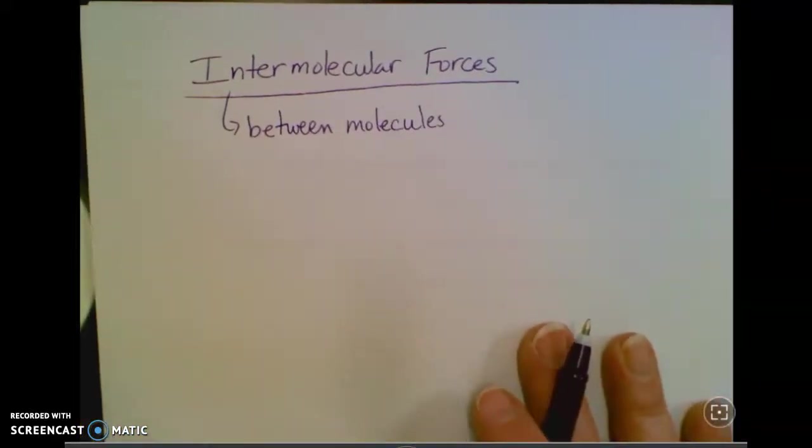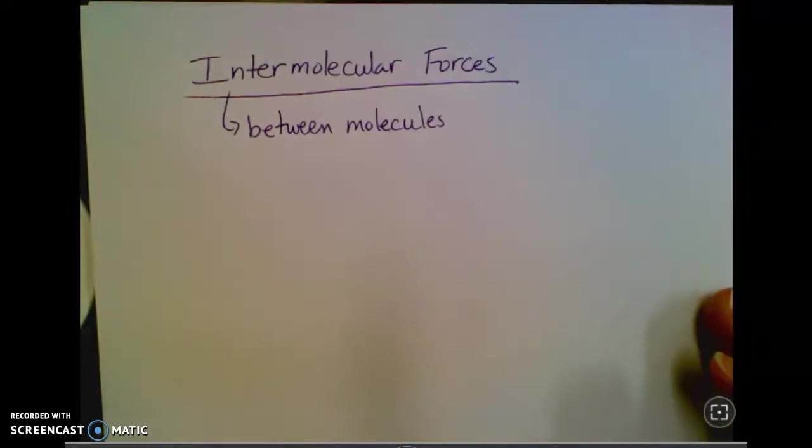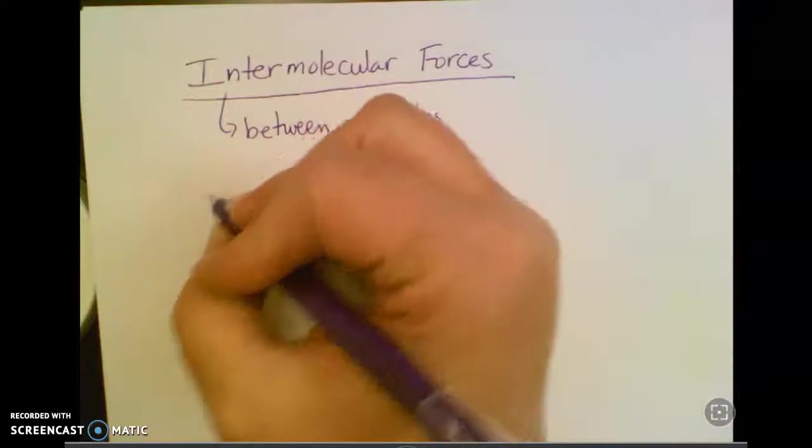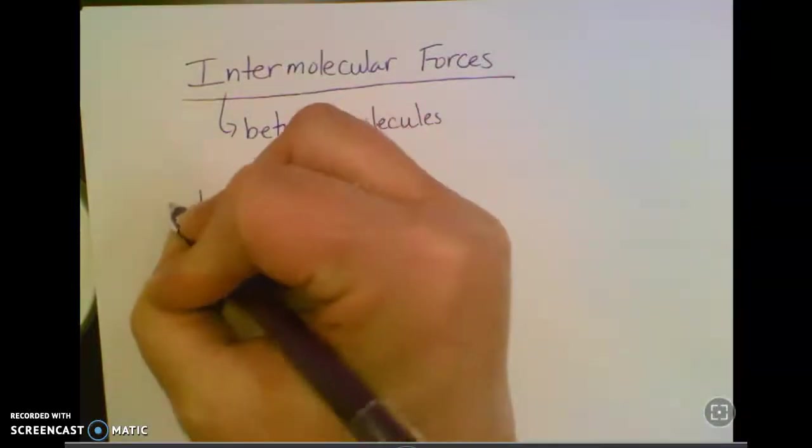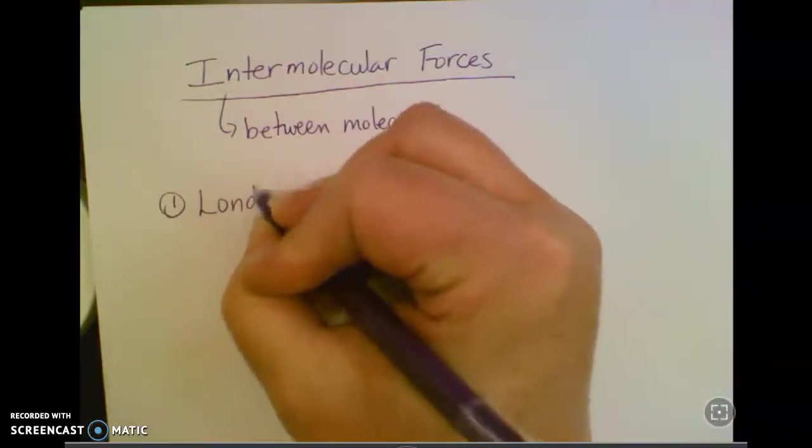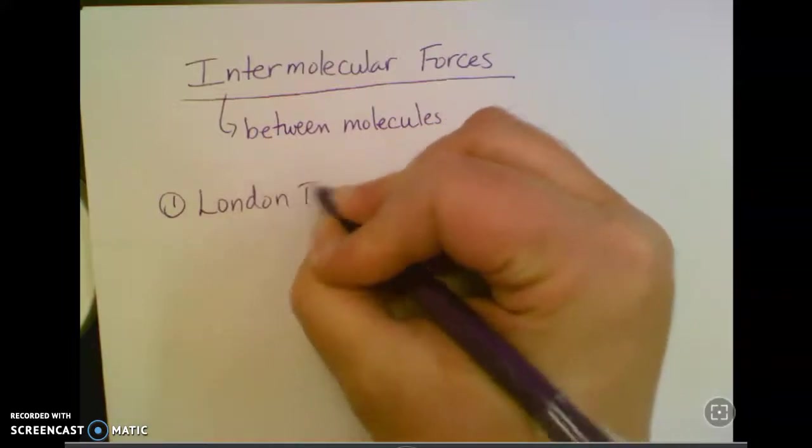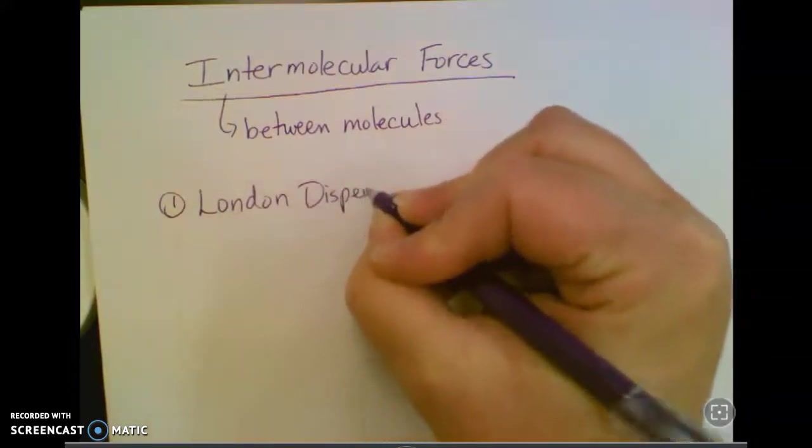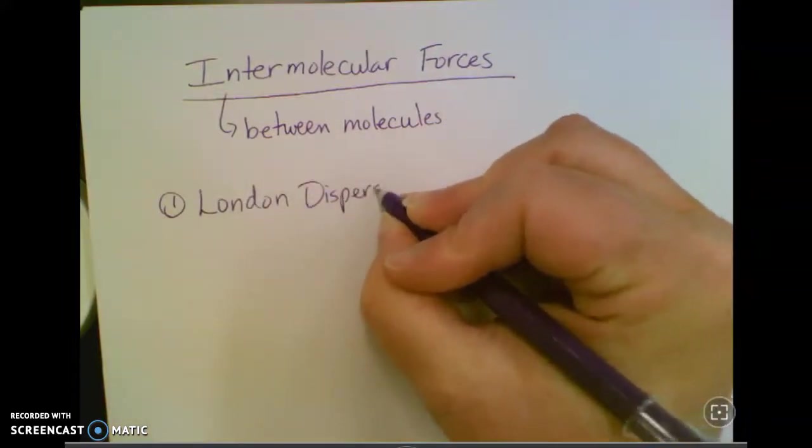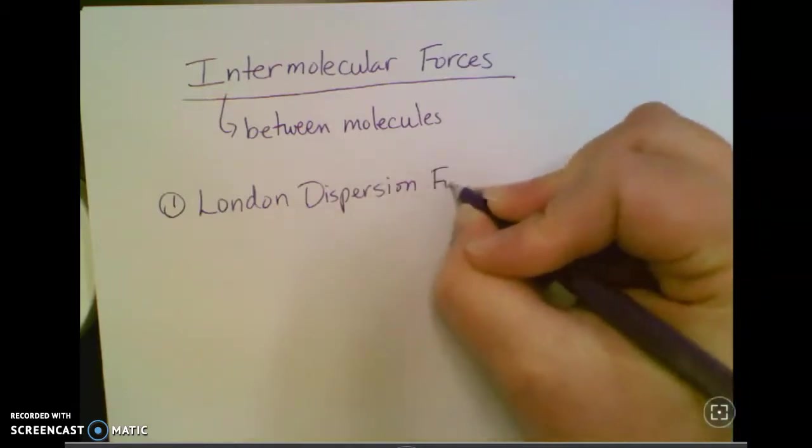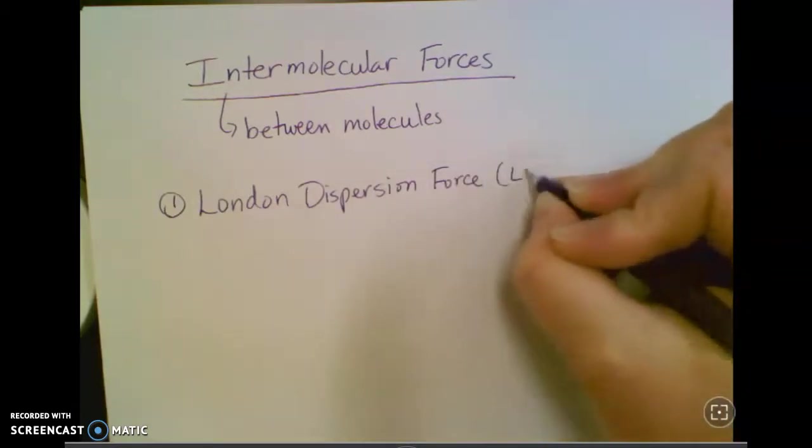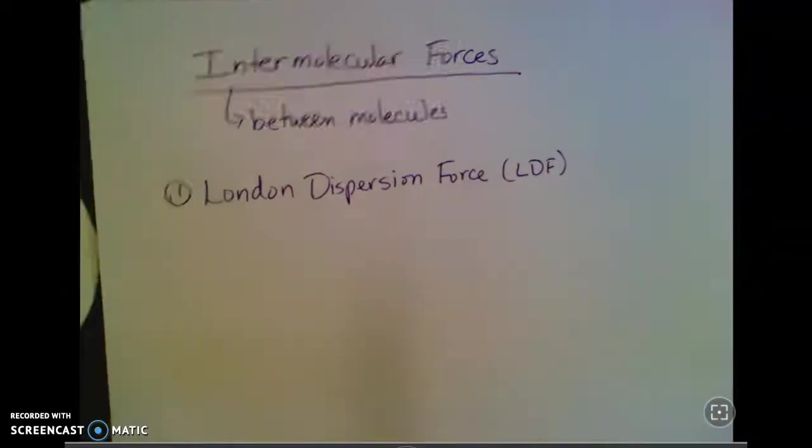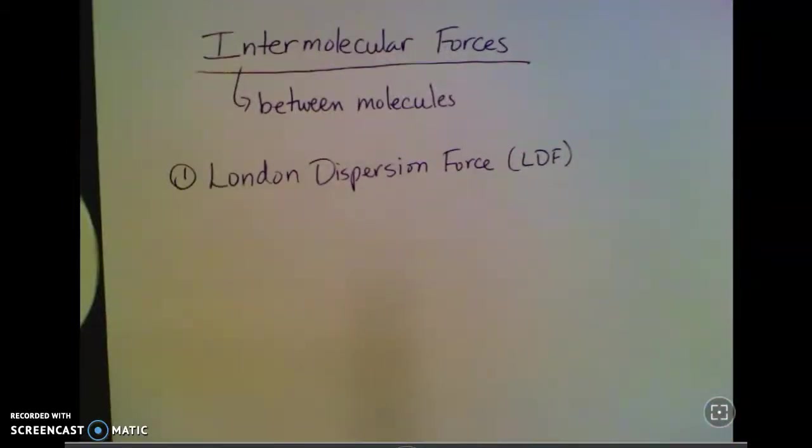There are really three types. Actually, there are two types of intermolecular forces, but we have three names for them. Let's start with the first one. This is a London dispersion force, also called a Van der Waals attraction. But we'll usually use London dispersion force, or LDF for short.